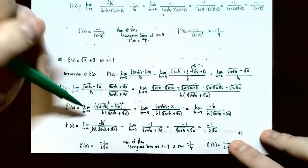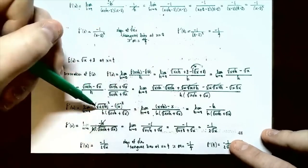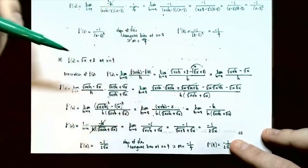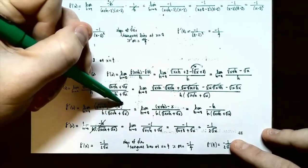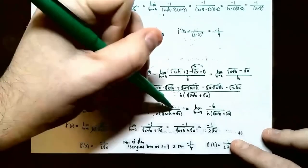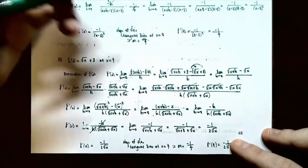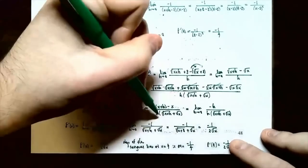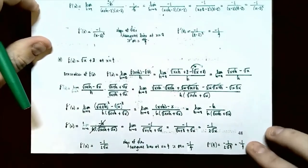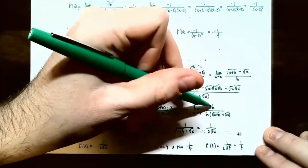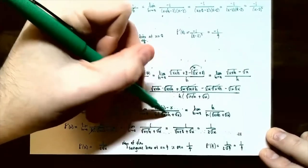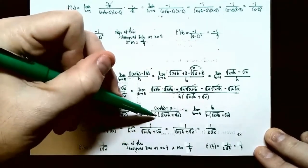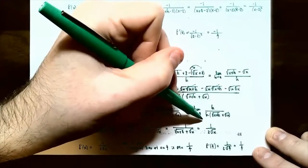Squaring a square root cancels them out, so square root of x plus h squared gives x plus h, and square root of x squared gives x. The numerator becomes x plus h minus x, and the x's cancel, leaving just h in the numerator. The denominator is h times the radical conjugate. Keep the denominator factored so you can cancel h divided by h, which equals 1.